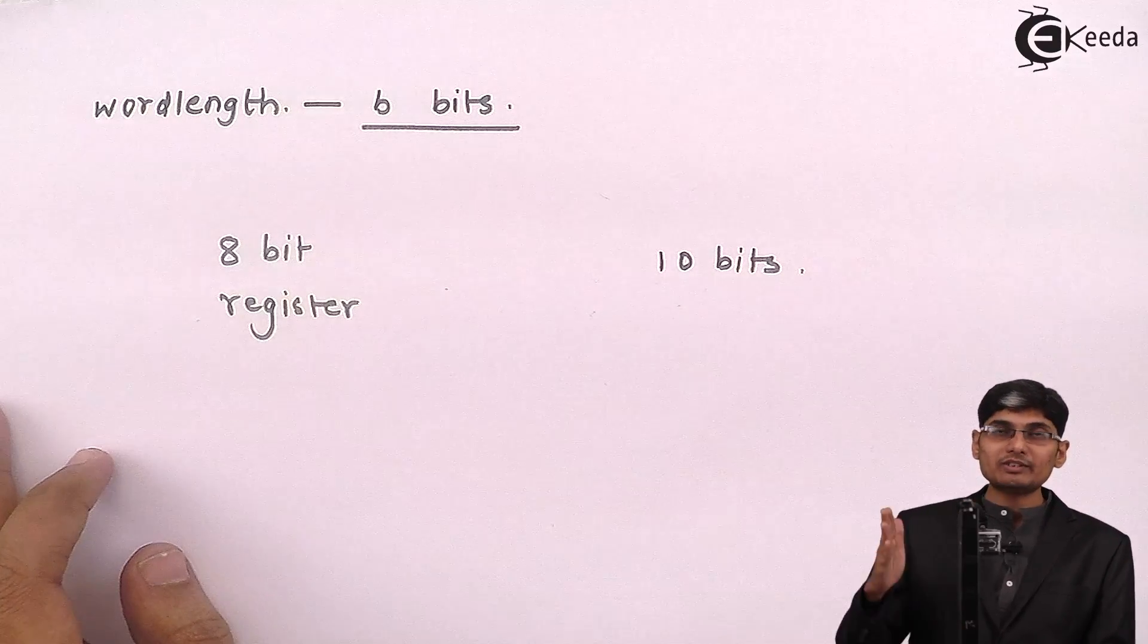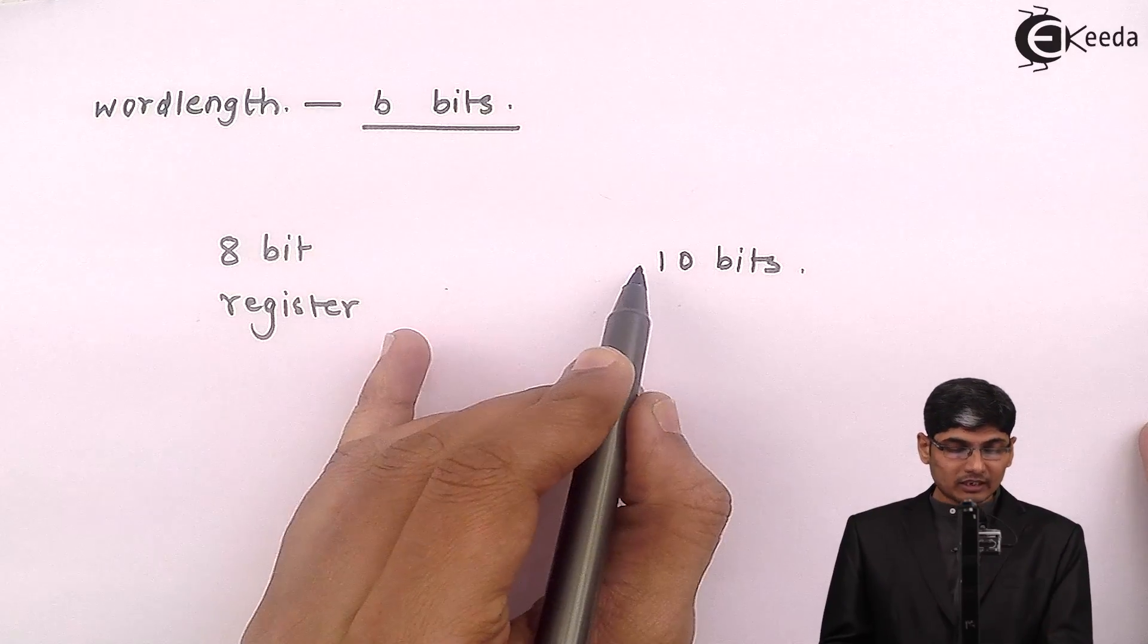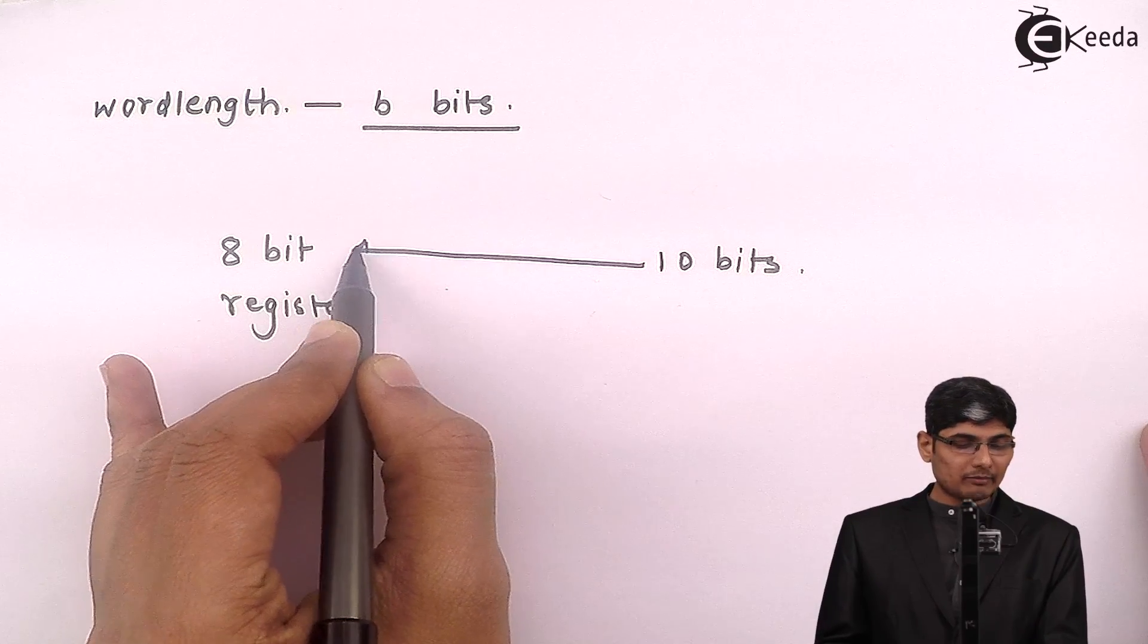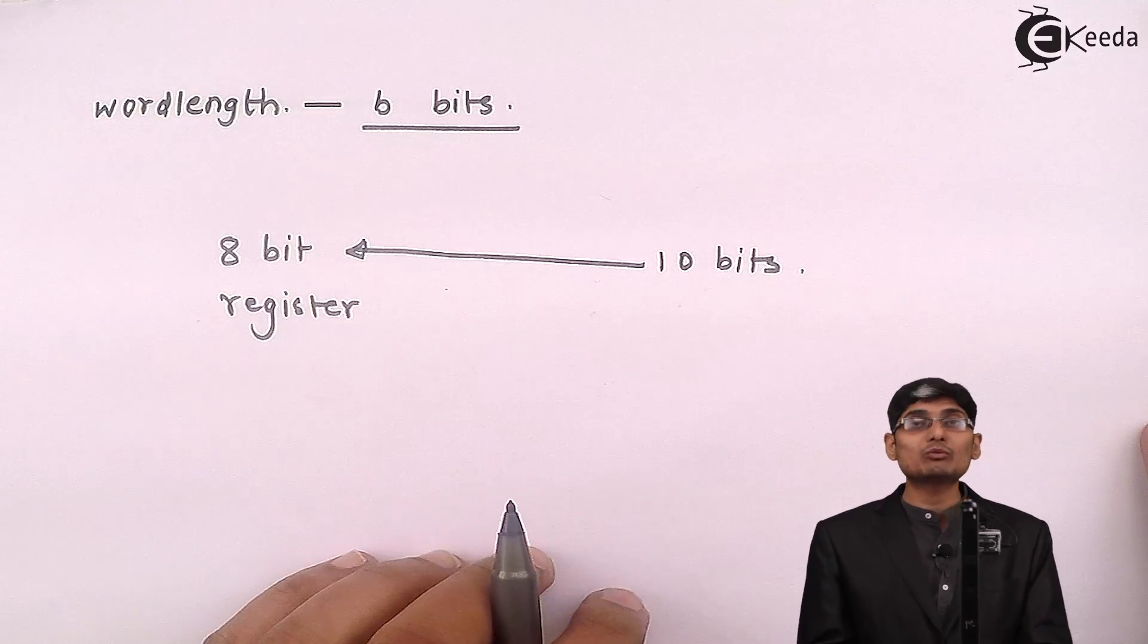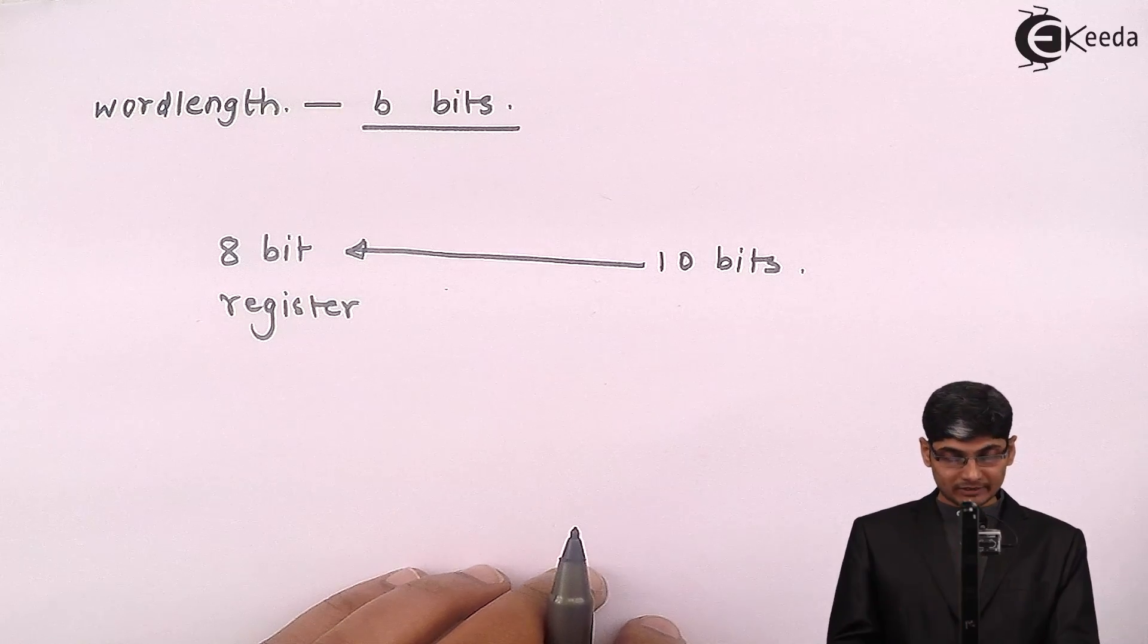By processing I am getting the number to be 10 bits. How should I fit the 10 bits into 8-bit register? So that is a very big question that how can I fit this 10 bits into 8 bits.